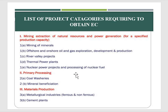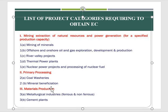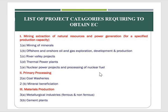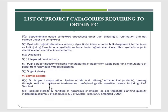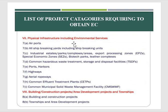The list of project categories required to go through environmental clearance includes: mining and extraction, primary processing, material production and materials processing, manufacturing and fabrication, service sectors, physical infrastructure including environmental services, building construction projects, area development projects, and townships. These categories are prepared such that they must go through environmental clearance before starting the project.